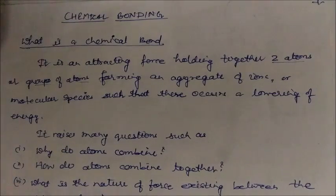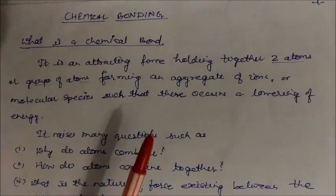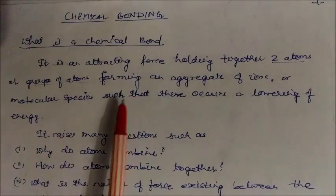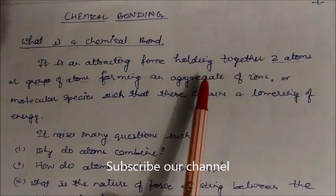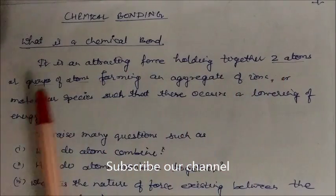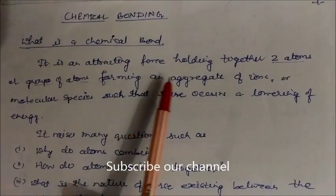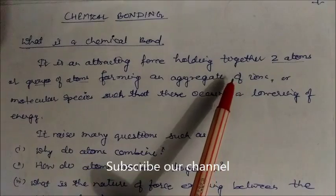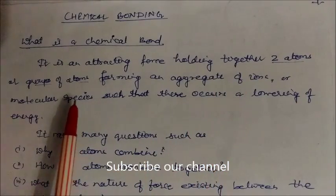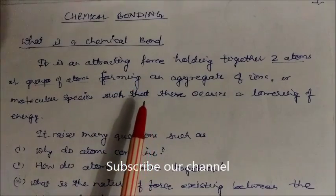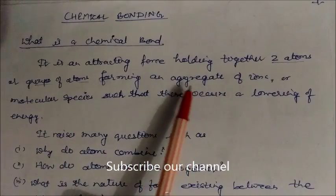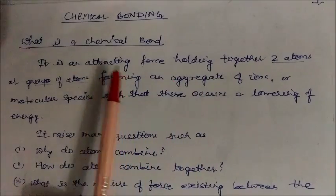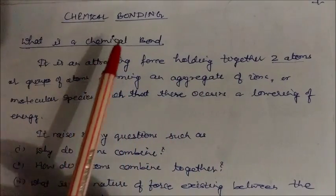Welcome to this session. Today we will study lectures on chemical bonding. So what is actually a chemical bond? It is an attractive force which holds together two atoms. The force can be between two atoms, or it can be a group of atoms forming an aggregate of ions like sulfate or carbonate, or molecular species like H2 or Cl2. This occurs with a lowering of energy. This attractive force is called a chemical bond.